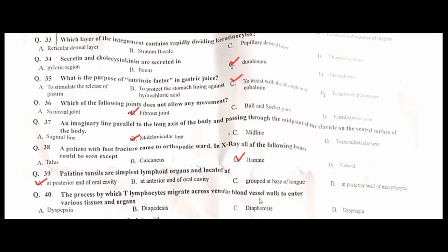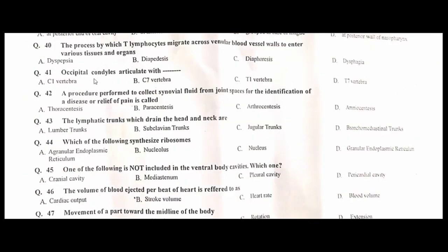The process by which T lymphocytes migrate across venule blood vessel walls to enter various tissues and organs is called diapedesis. B is the correct option. Occipital condyles articulate with C1 vertebra. A is the correct option.